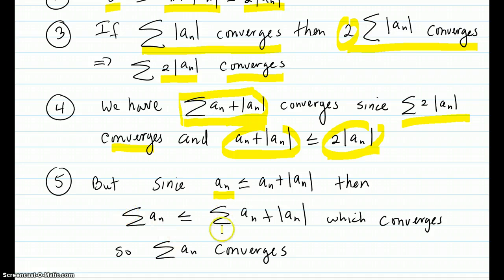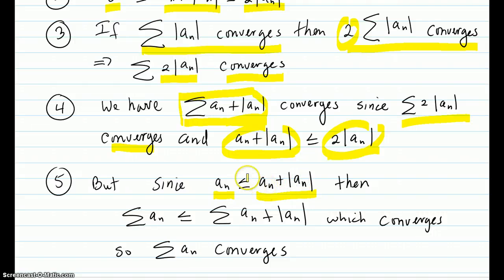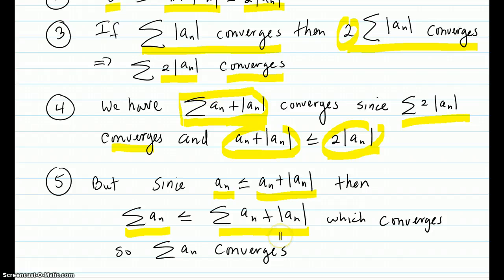Since a_n is less than or equal to a_n plus |a_n| — because adding an absolute value is adding a positive number or zero — the a_n terms are of course less than or equal to that. So the series Σa_n is less than or equal to Σ(a_n + |a_n|) by term-by-term comparison. We already said in step four that this latter series converges.